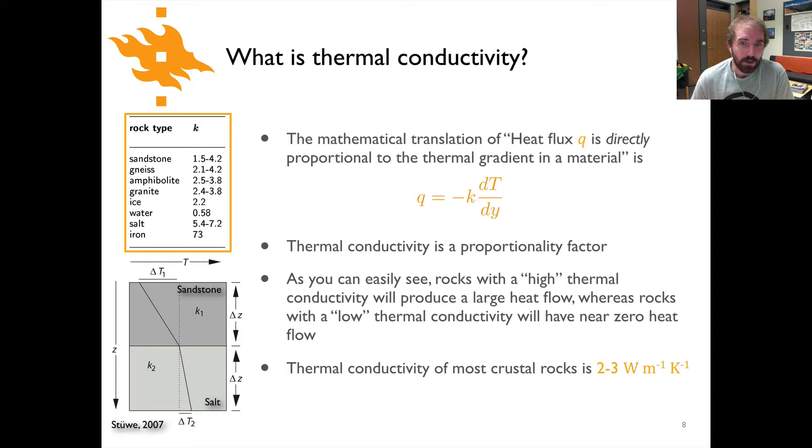Now the proportionality factor out here in front, this K, is called the thermal conductivity, and what we have over here on the left side are the thermal conductivity values for various rock types and other materials just to kind of give you some ideas. Thermal conductivity is going to be typically given in units of watts per meter per kelvin, and so you can see here that typical values for rocks are going to be somewhere in the order of two to three. You can consider an extreme example in terms of materials in the earth that occur in any significant thickness with salt where you have values of five to seven, and iron for example would have a very high thermal conductivity of 73.